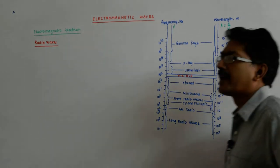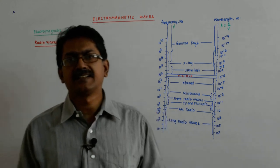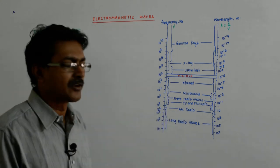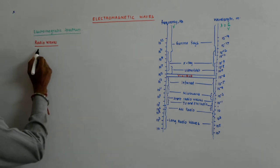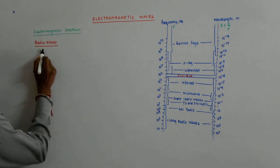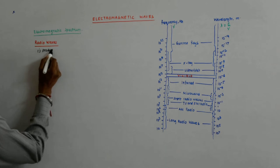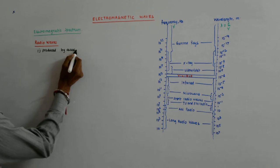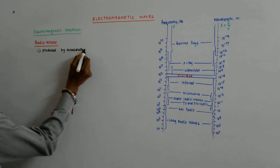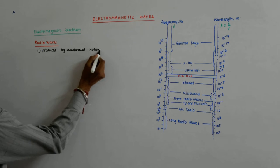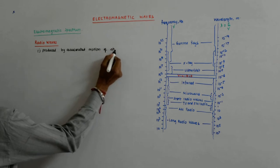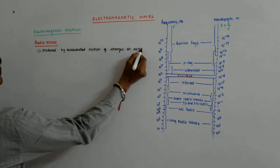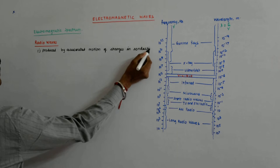We now start discussing one by one the components of the electromagnetic spectrum, and the first in that line is the radio waves. Radio waves are produced by accelerated motion of charges in conducting wires.